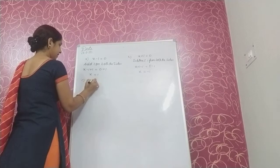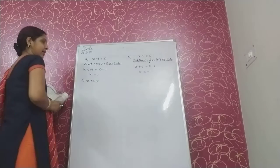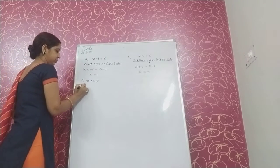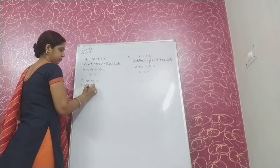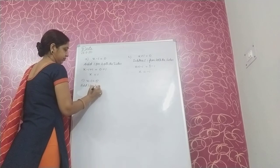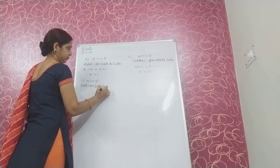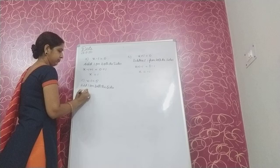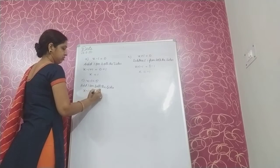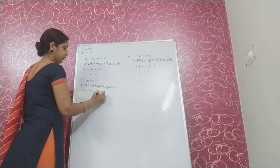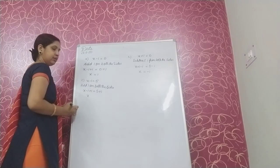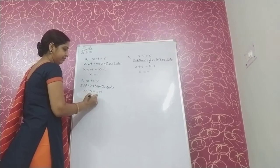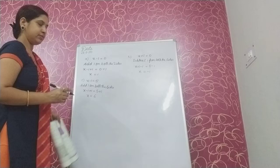Next, x minus 1 equal to 5. Here on the left side with the variable we have minus 1, so add 1 on both the sides. x minus 1 plus 1 is equal to 5 plus 1. On the left side we have x only because minus 1 plus 1 becomes 0. On the right side we have 6. So the value of x is 6.